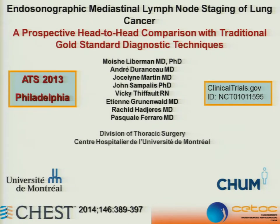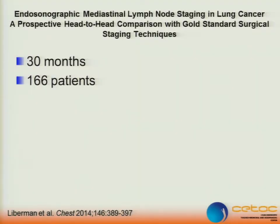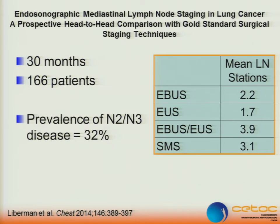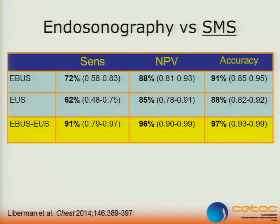We looked at mediastinal lymph node staging with EBUS and EUS compared to surgical mediastinal staging — meaning mediastinoscopy plus or minus mediastinotomy or VATS if station 5 or 6 were positive on CT or PET. We looked at 166 patients over 30 months, prospectively enrolled. EBUS biopsied around 2.2 lymph node stations, EUS 1.7, combined about 4, and surgical mediastinal staging 3.1. Prevalence of N2/N3 disease was 32%. Sensitivity was 72% for EBUS and 62% for EUS; when combined, 91% sensitivity with 97% accuracy.